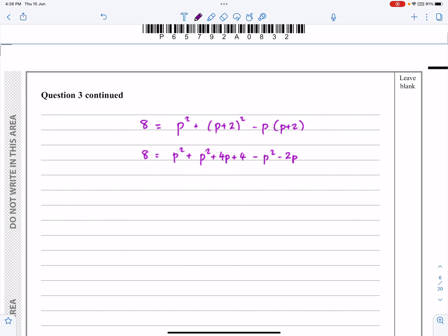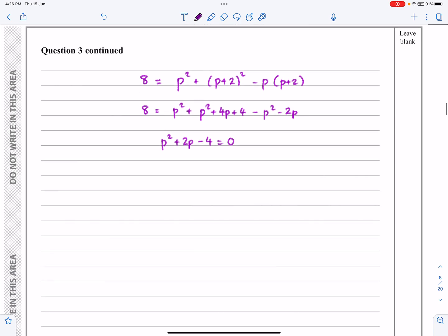They've given us a clue where they said give me the exact values for P and Q. I don't think this one is going to factorize. I think I'm going to have to use the formula for this. So P = -2 ± √(2² - 4(1)(-4)) all over 2. I wanted that to work out to be a plus. All over two A, all over two.